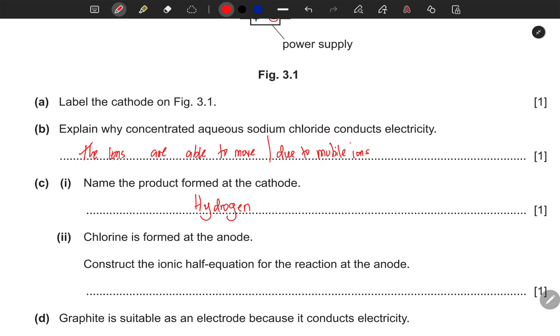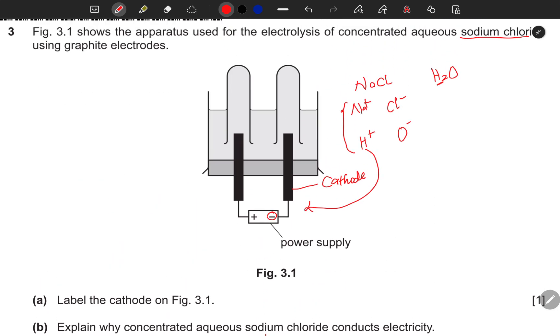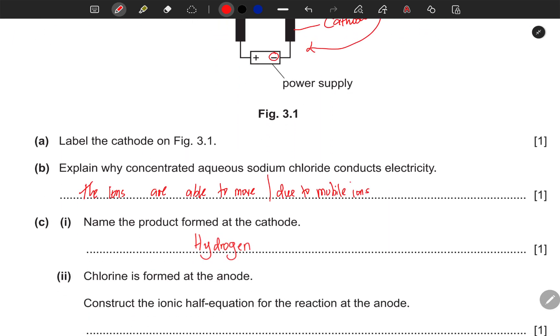Chlorine is formed at the anode because it's one of the negatives. Remember, opposite charges attract, so the negative ions will be attracted to the positive. Chlorine can easily be discharged more than oxygen.